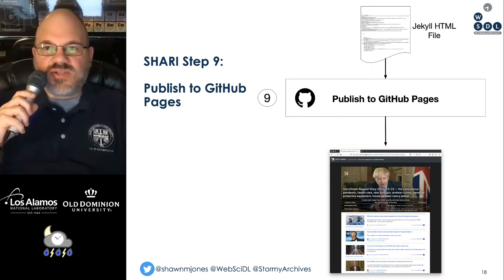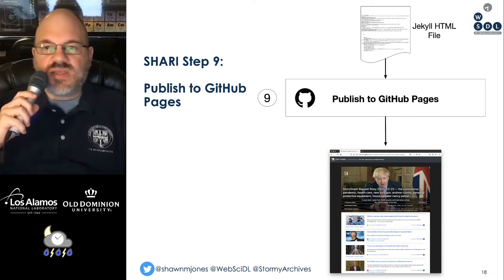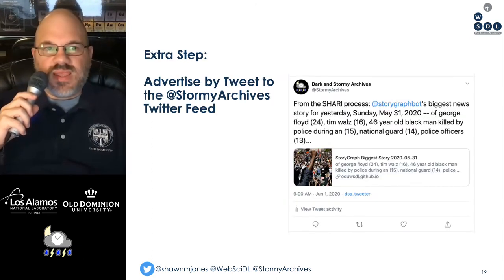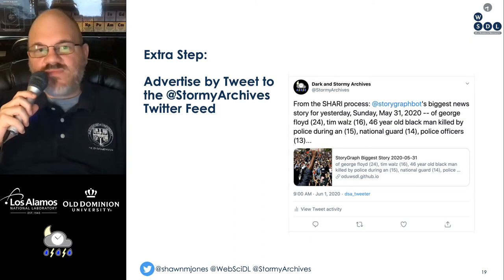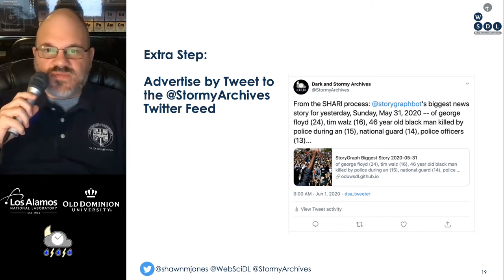In step nine, we take that Jekyll HTML file and publish it to GitHub Pages, because Jekyll is the format used by GitHub Pages to render its web pages. As an extra step, we advertise via Twitter using the Stormy Archives Twitter feed that this particular story is available.